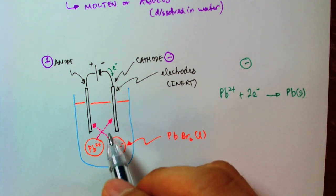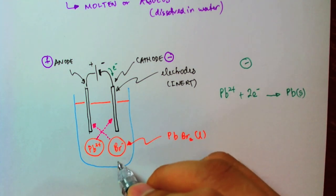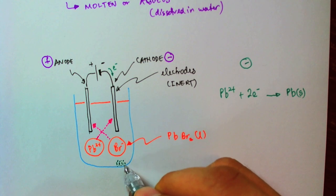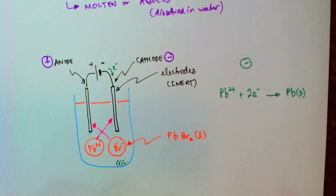And since solid lead doesn't really stick to carbon, it's going to fall down here. So, we're going to find solid lead being deposited at the bottom of the beaker, just below the cathode, right here.